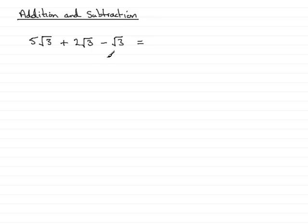What would this come to? Well, all the terms are the same kind of terms, they're root 3 type terms, and so we've got 5 root 3 plus 2 root 3, that's going to be 7 root 3. And then we take away another 1 root 3, and that's going to mean that we get 6 root 3.